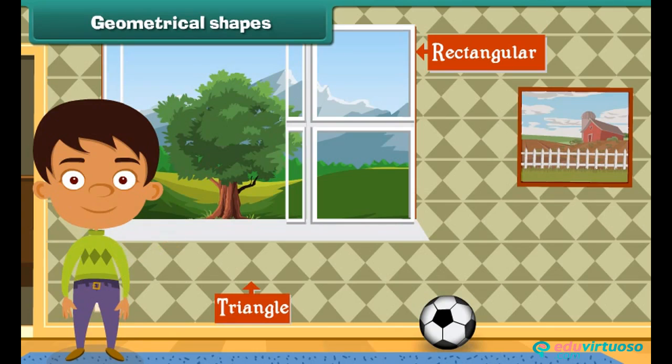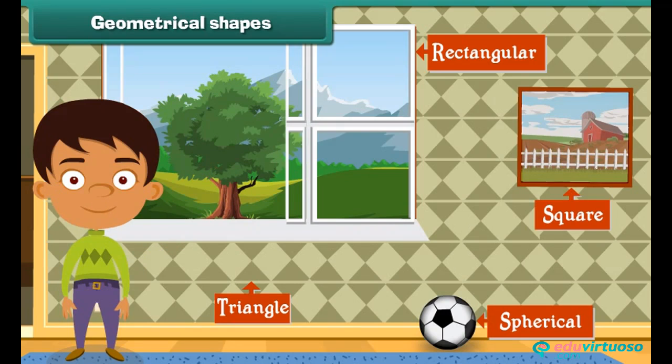Look at the window of your room. It is rectangular in shape. The design on the tiles is triangular. Look at the ball lying in the room. Its shape is spherical. Now look at the frames of the painting hanging on the wall. It is square in shape.